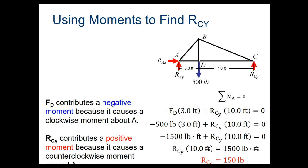The 500-pound force at D is three feet from pivot point A along the line of action. It would cause clockwise rotation around A, so it's negative. The force at C, RCY, is drawn upward and would cause counterclockwise rotation, making it positive. We don't know RCY yet — that's what we're solving for — but we know it's 10 feet from A (3 plus 7).